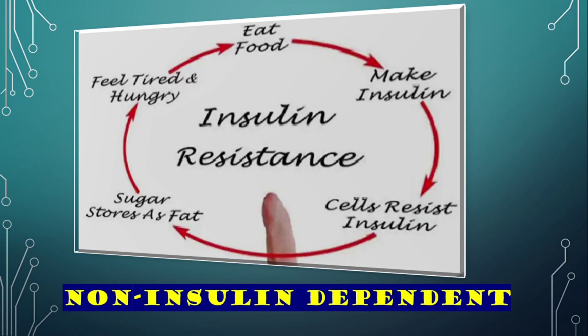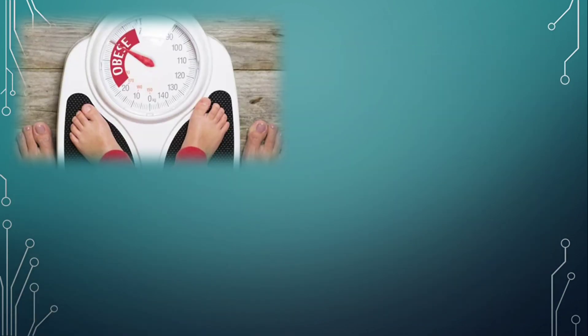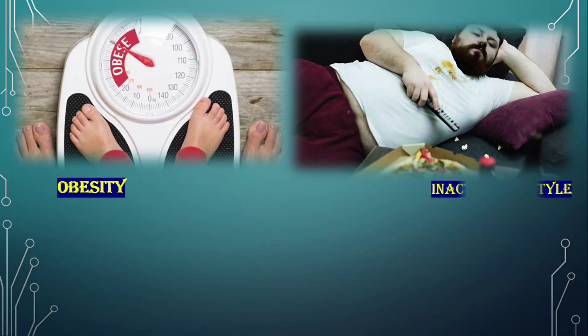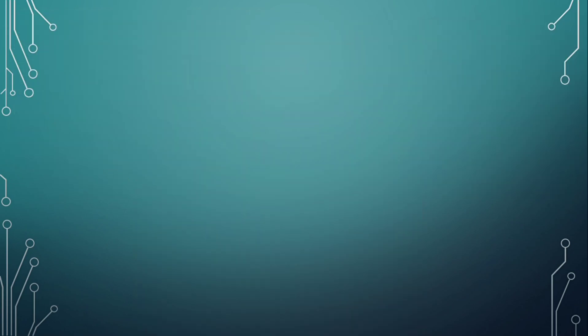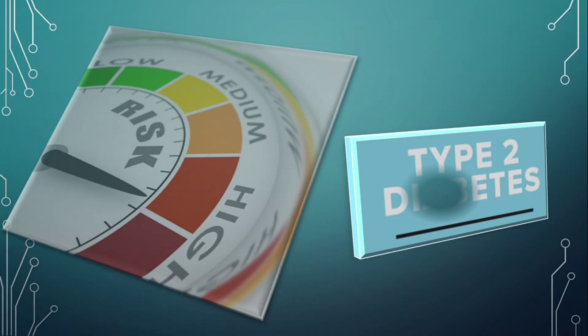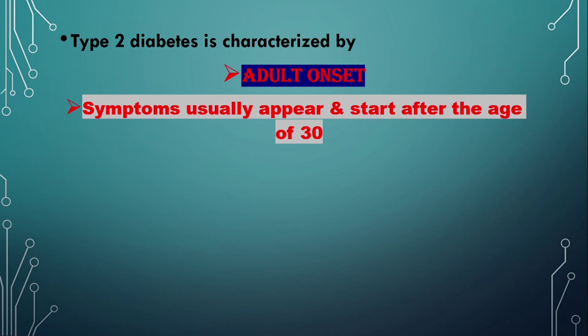Genetic factors predispose susceptibility to the disease, but lifestyle is believed to play a very important role in Type 2 diabetes. Typically, obesity, an inactive lifestyle, and an unhealthy diet are associated with higher risk. It is characterized by adult onset — symptoms usually appear after the age of 30.